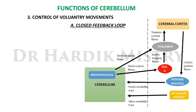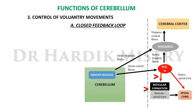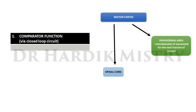Efferents from the dentate nucleus pass through the superior cerebellar peduncle, cross the midline, and divide into two groups: dentothalamic fibers reaching the motor cortex via thalamocortical fibers, and dentorubral fibers synapsing in the red nucleus of the opposite side. The rubrospinal tract projects directly to the spinal cord, and the rubro-reticular tract terminates in the reticular formation, which projects via the reticulospinal tract.